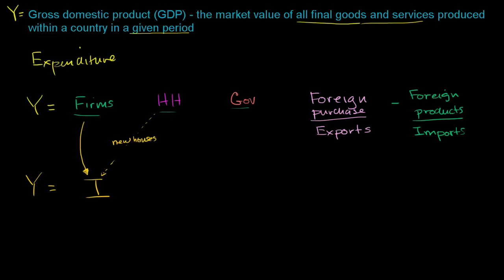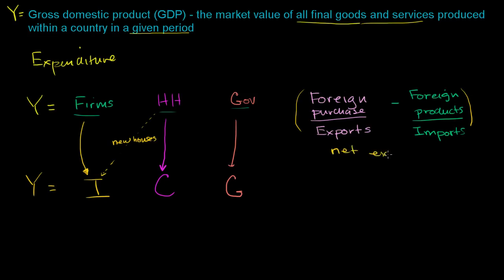But the bulk of household spending is considered to be consumption. And then everything that the government spends on — whether it's the military, salaries for police, the groundskeeping at the White House, whatever else, if we're thinking about the US — that goes straight to G, government spending. And this part over here — foreign purchases, or exports, minus imports — you have exports minus imports, so you can view this as net exports.